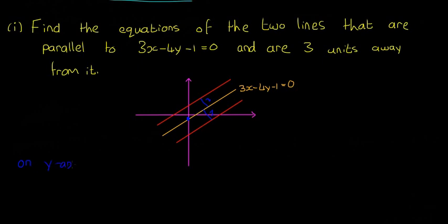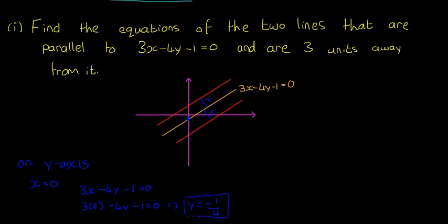On the y-axis, x is equal to 0. So I'm going to say 3x minus 4y minus 1 equals 0, and with x equal to 0, it becomes 3 times 0 minus 4y minus 1 equals 0. If we rearrange this, y is going to be equal to minus 1 over 4, because the x term goes away. So we know one point on the line: (0, minus 1 over 4). That's where it crosses the y-axis — that's where that blue dot is.